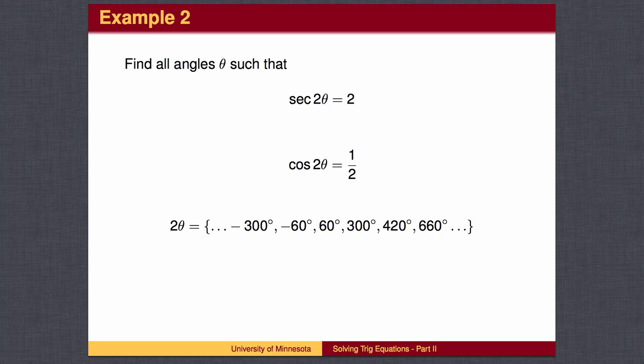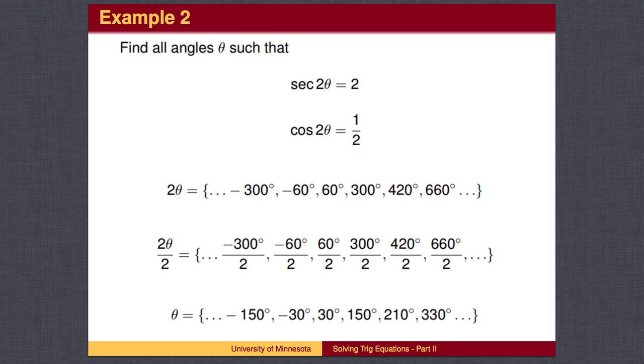We can then make a list of angles 2 theta by looking up values from the unit circle, and adding and subtracting full circles to get a complete set of answers for 2 theta, and divide by 2 to get a complete list of answers for theta.